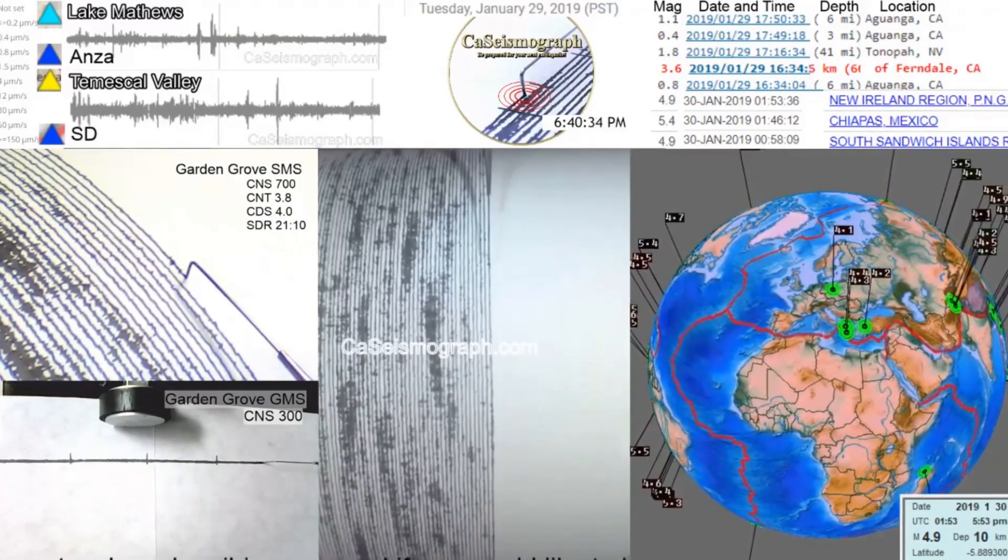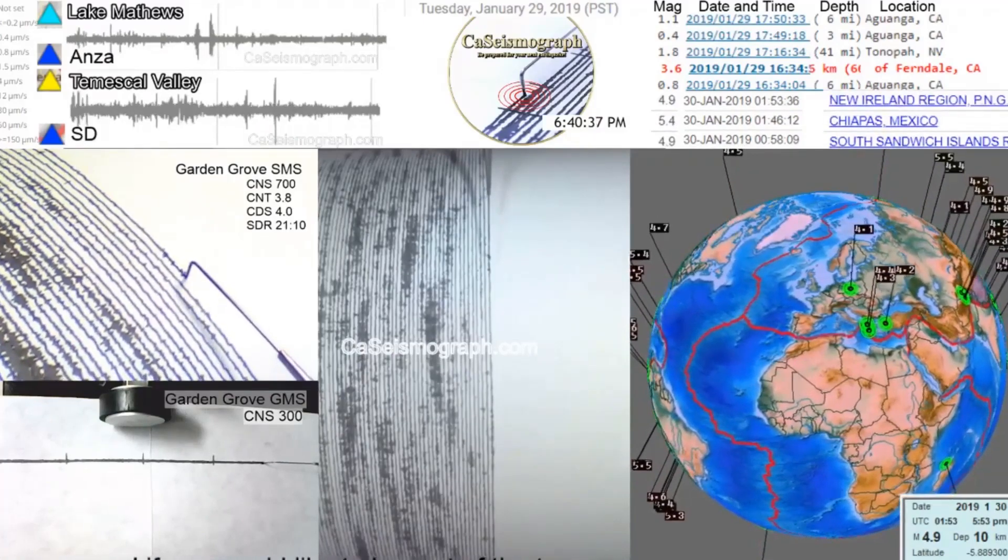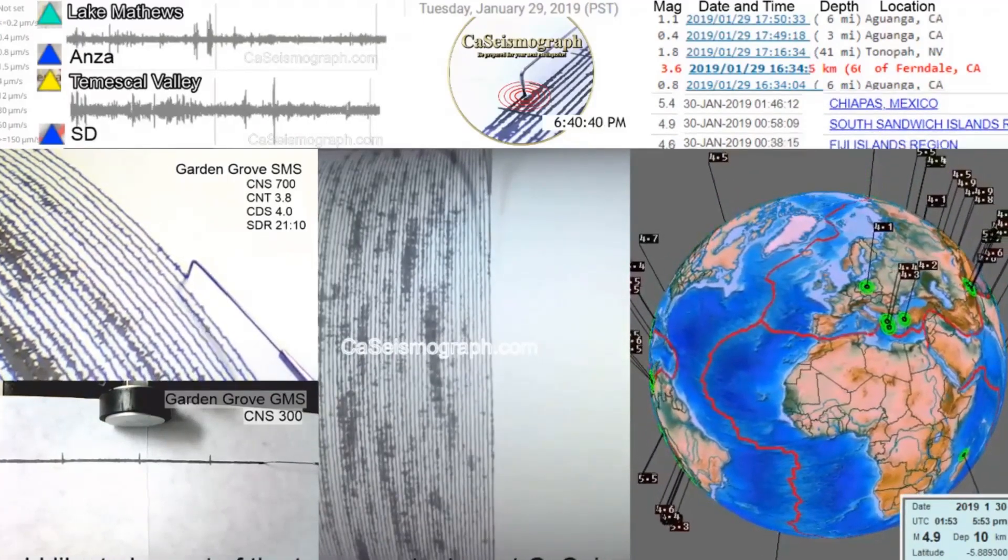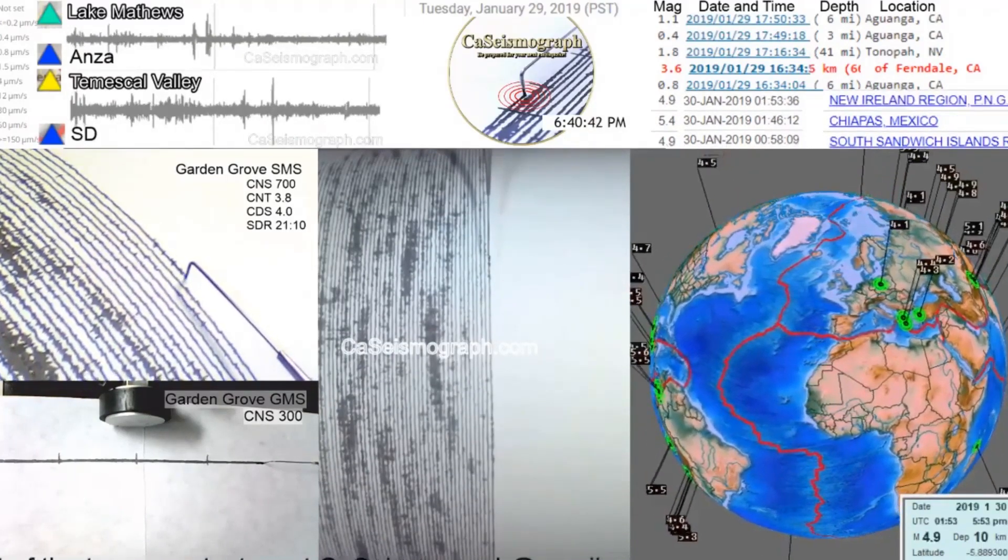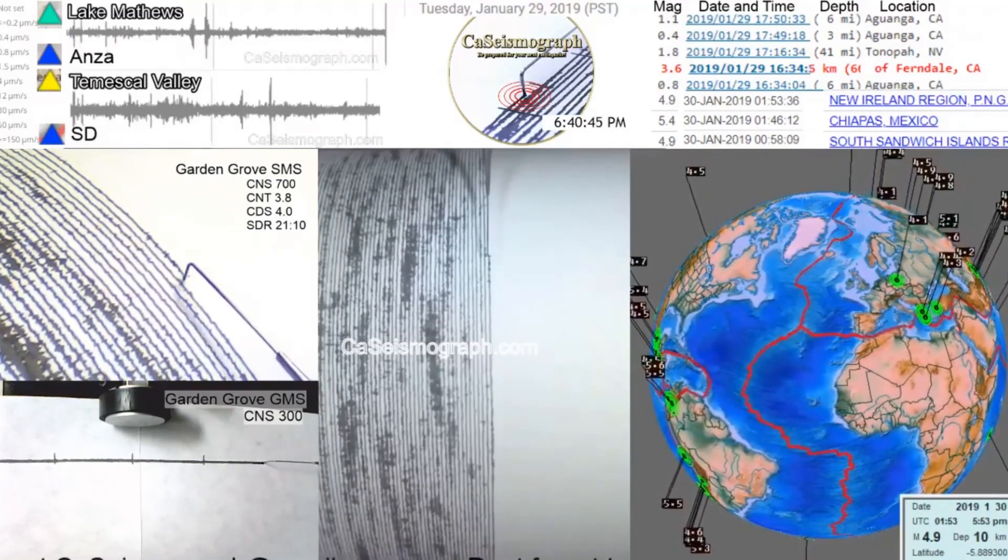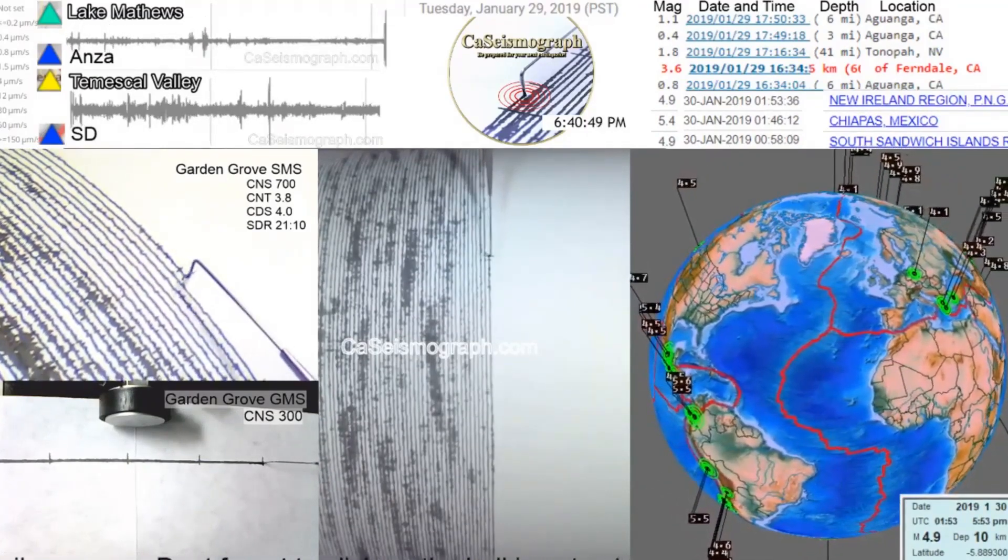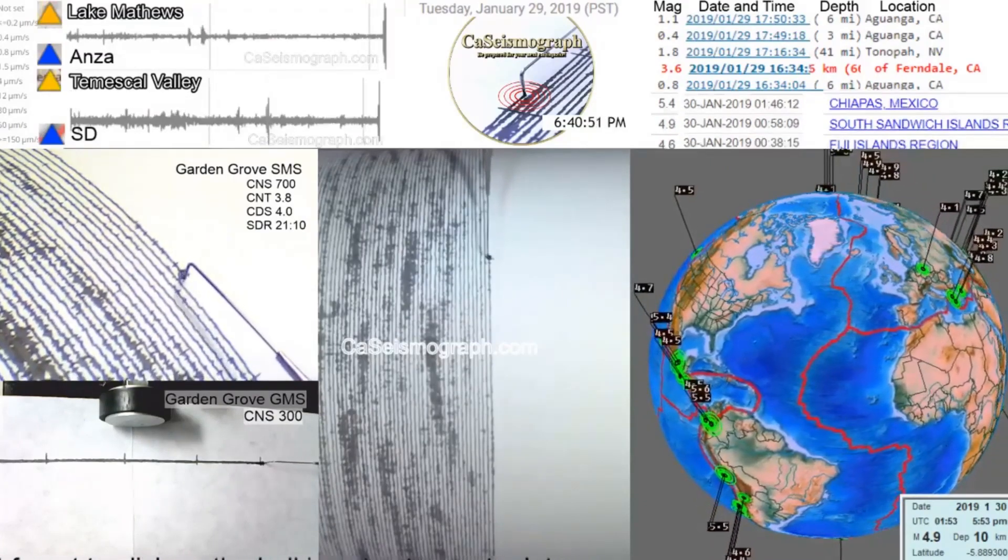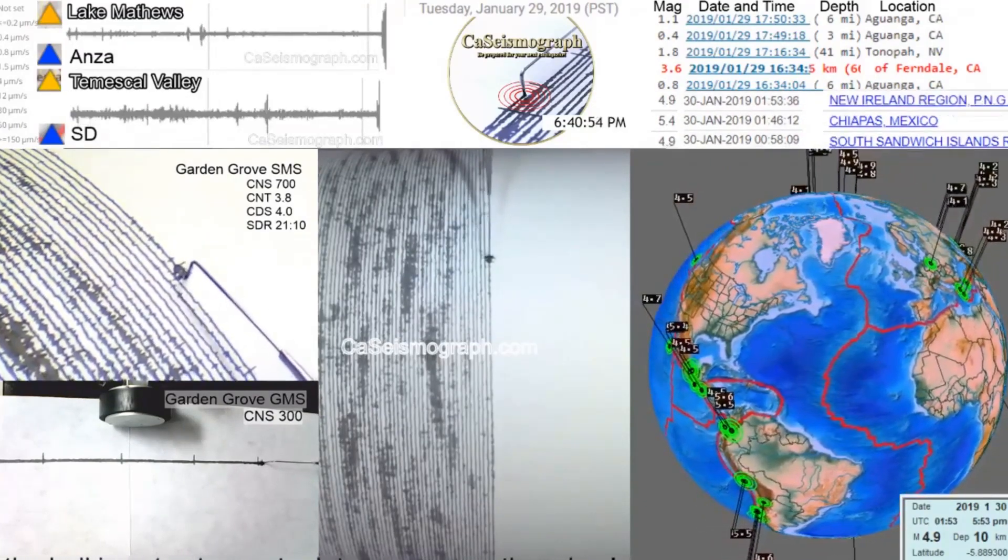It's been quiet for a while. This is a great earthquake to do a little bit of explanation about. The earthquake occurred at 6:40 just about right now. There it shows up on Lake Matthews first and we also see directly the Mescal Valley and our seismograph picks it up.